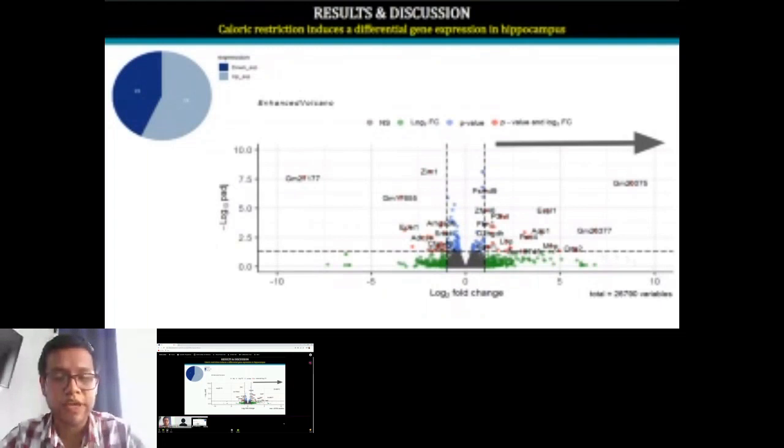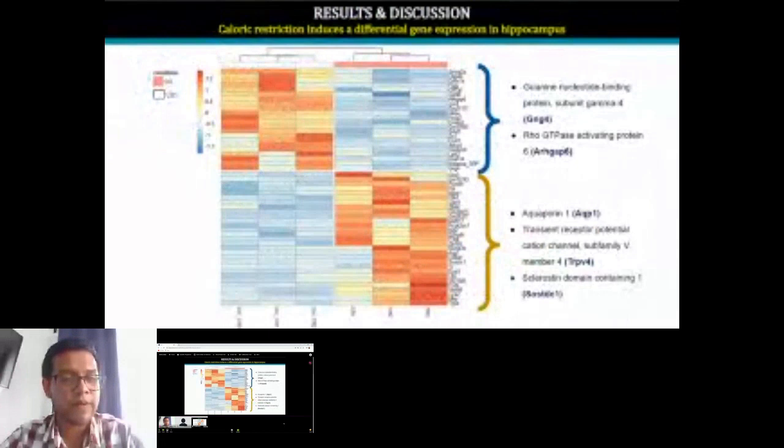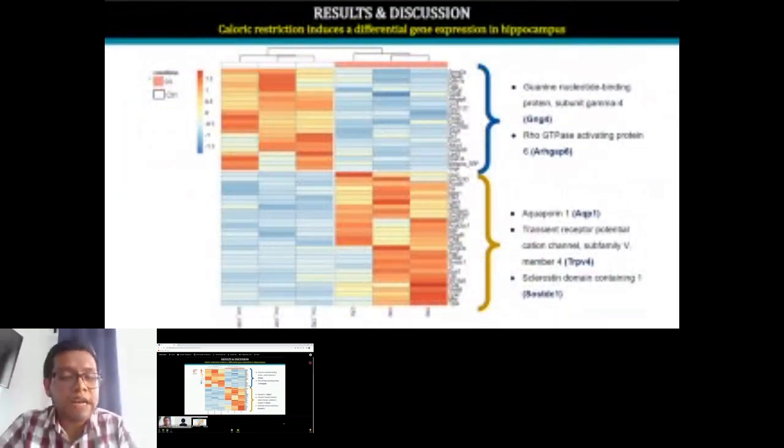With these genes that are significantly expressed, we performed a heatmap with those genes that were significantly expressed between the conditions. We identified the changes in genes according to our experimental groups.